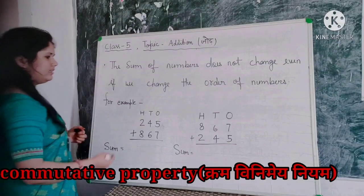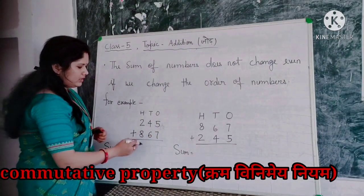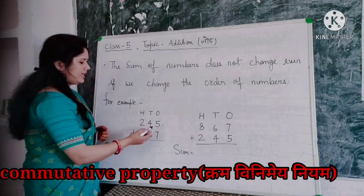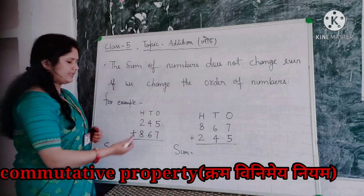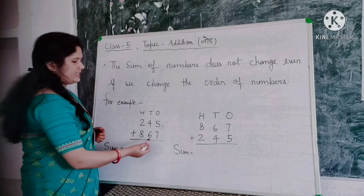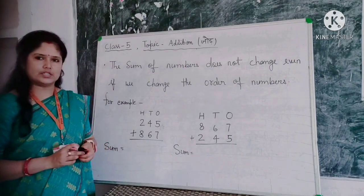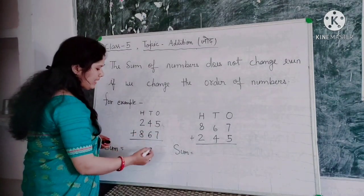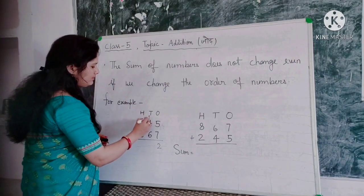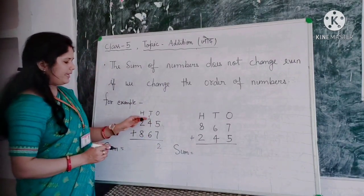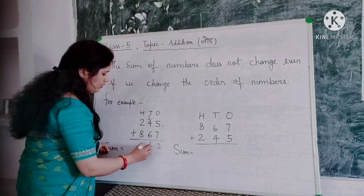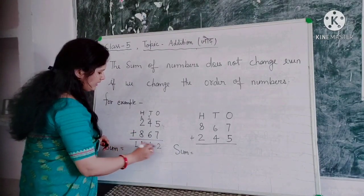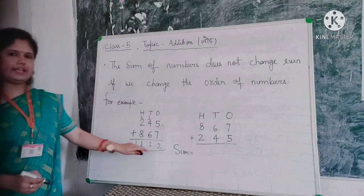For example, we have two numbers: 245 and 867. When we add them — 5 plus 7 is 12, write 2 carry 1; 4 plus 6 plus 1 is 11, write 1 carry 1; 2 plus 8 plus 1 is 11, write 1 carry 1 — giving us a total of 1,112. The sum of these numbers is 1,112.